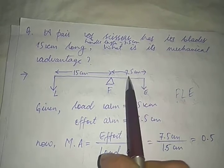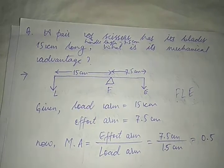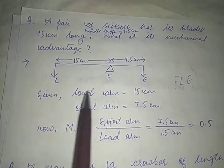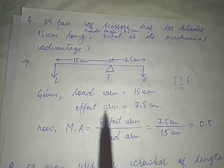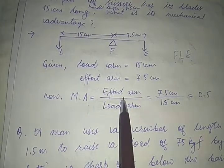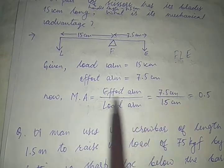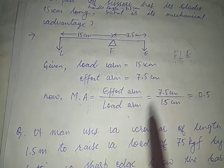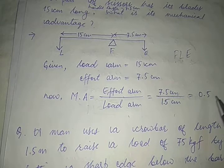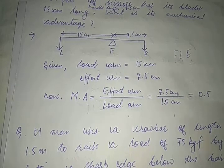Effort arm is 7.5 centimeters, load arm is 15 centimeters. Mechanical advantage equals effort arm divided by load arm, so mechanical advantage comes out to be 0.5. It is unitless because it is the ratio of the same two quantities.